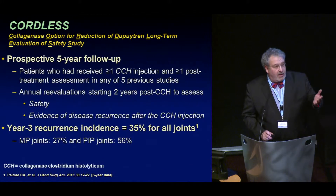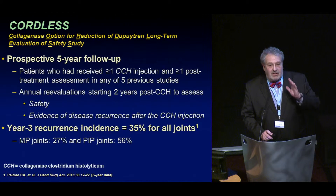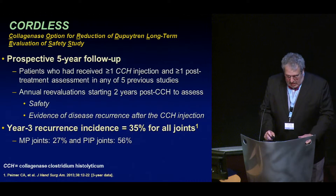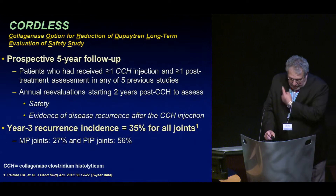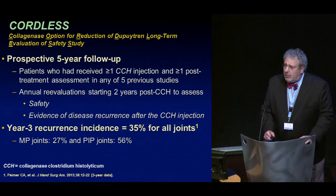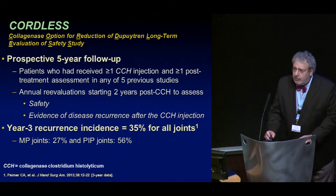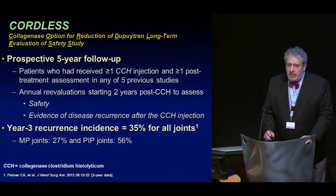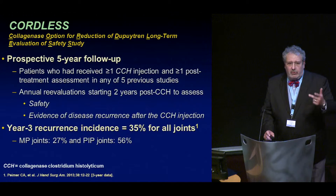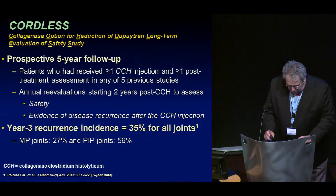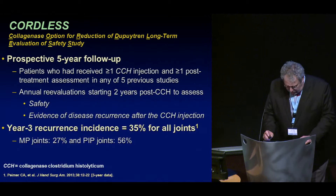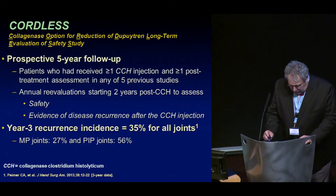One of the things that Larry and Marie have brought to us is a very strict and clear definition of what a recurrence is. CORDLESS means what it says here. This is a prospective five-year follow-up study for patients who had received one or more CCH injections and one or more post-treatment assessments in any of the five previous studies — CORD 1, CORD 2, JOINT 1, JOINT 2, and the CORD 1 extension study. They have had annual reevaluations starting two years after collagenase to assess safety and evidence of recurrence.